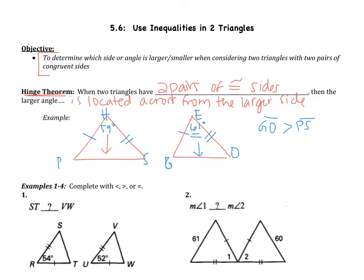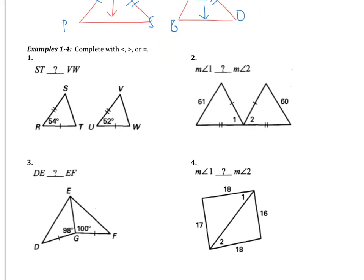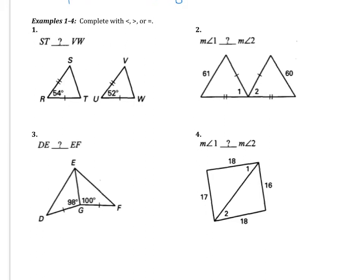That's mainly what the hinge theorem says. Looking at examples one through four, you're going to be comparing either two sides or two angles. In example one, the hinge theorem applies because there are one pair and a second pair of congruent sides. S-T is across from the bigger angle, so S-T will be bigger than V-W. V-W is located across from the smaller angle, so V-W will be smaller.